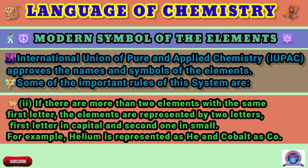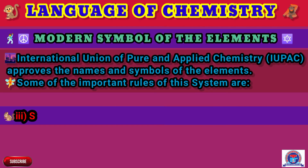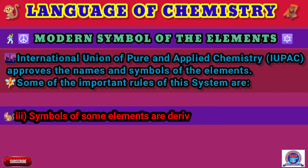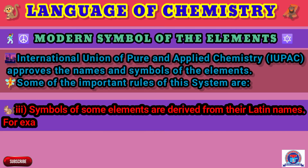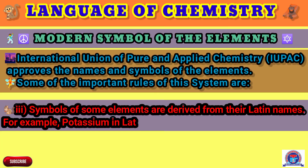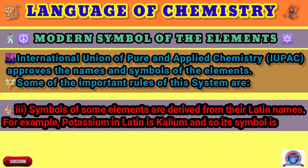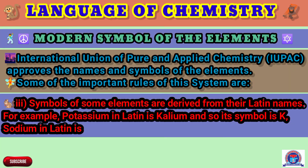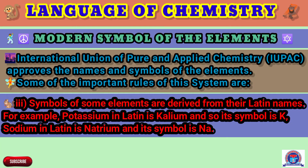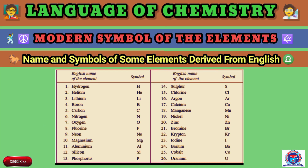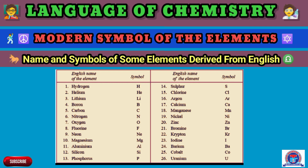Rule 3 — symbols of some elements are derived from their Latin names. For example, potassium in Latin is Kalium and so its symbol is K. Sodium in Latin is Natrium and its symbol is Na. Here I have given some names and symbols of elements derived from English.